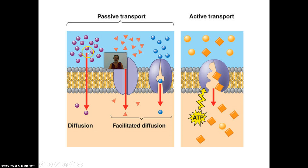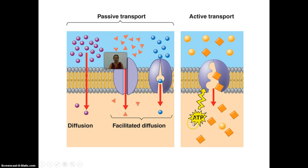To summarize: in simple diffusion, molecules move through the phospholipid bilayer from high to low — no energy needed. In facilitated diffusion, molecules also go from high to low but use channel proteins or carrier proteins — still no energy required. In active transport, protein channels and carrier proteins move molecules from a low concentration to a high concentration, which is not what molecules want to do, so energy is required for that process.